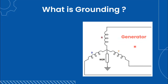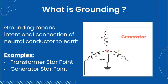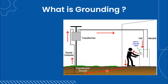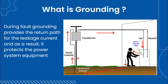On the other hand, grounding means the intentional connection of a neutral conductor to earth. Examples are transformer star point and generator star point. Here we can see that transformer neutral is connected with the earth. As the fault occurs, the current flows through the body into the ground, then from the ground to transformer neutral. This way the return path for leakage current is complete. As a result, a large current flows out of the transformer or generator which trips the circuit breaker and protects power system equipment.